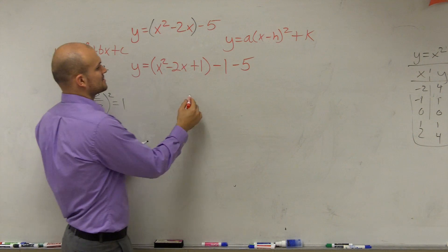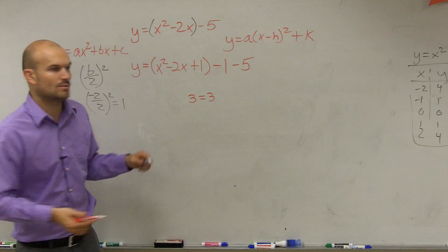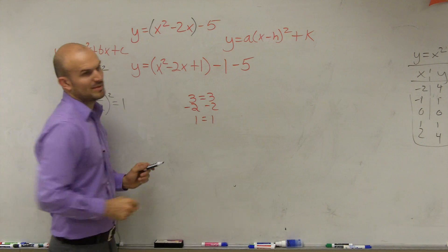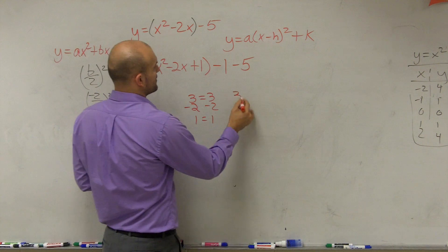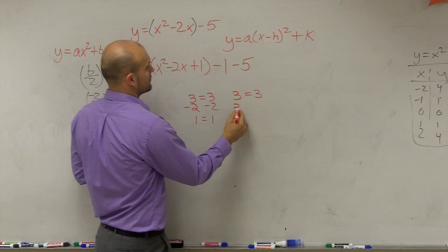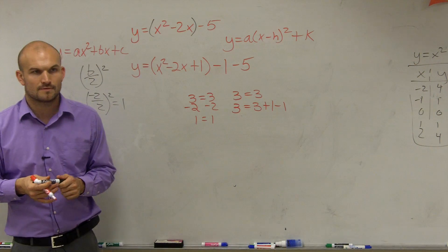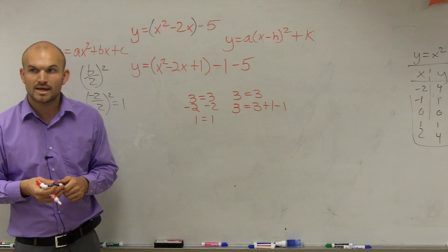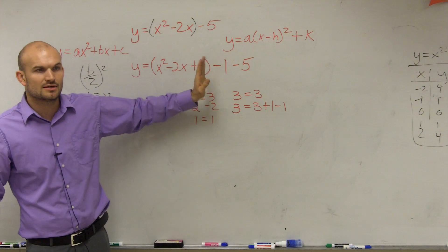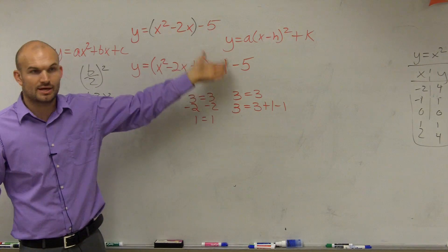Let me see if this makes sense. You guys said 3 equals 3, right? Whatever you do on one side, you have to do to the other side. What if I do the exact opposite operations to the same side? What if I do 3 equals 3 plus 1 minus 1? Are those still equal equations? Yes. So since I'm adding one, I can just subtract one on the same side — you just need to make sure you subtract it rather than adding it.